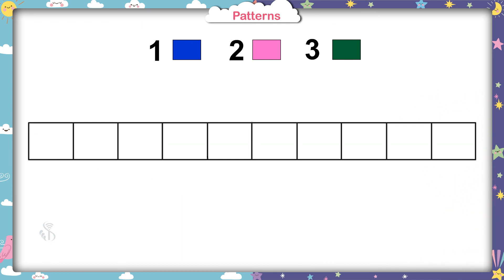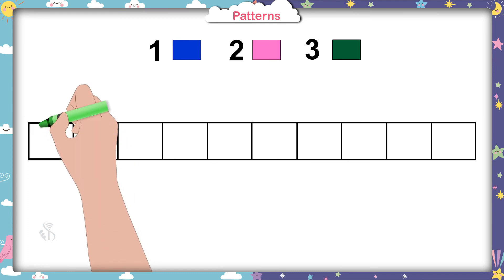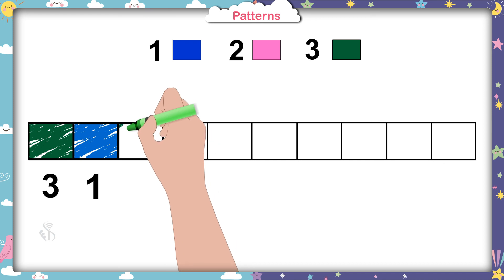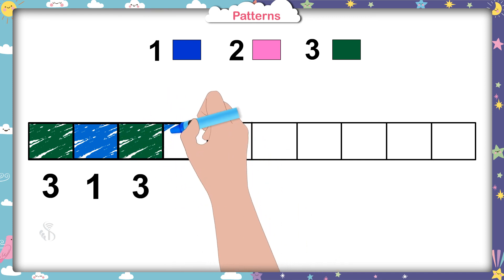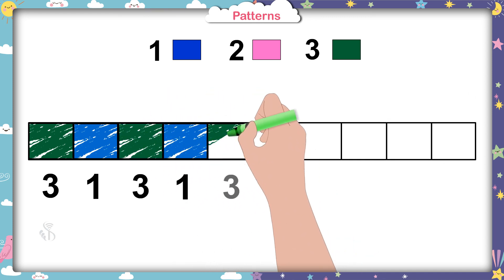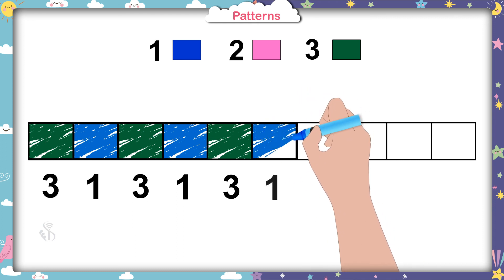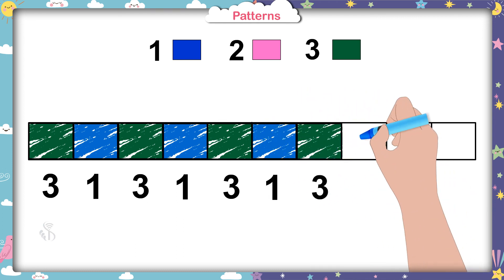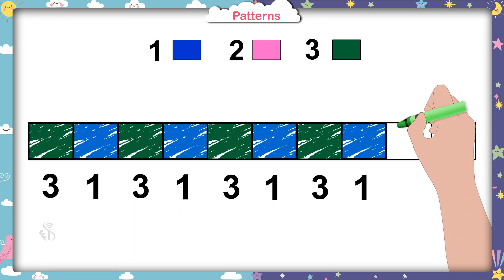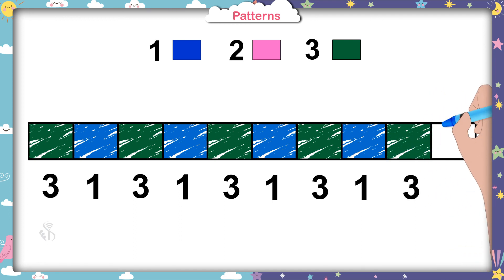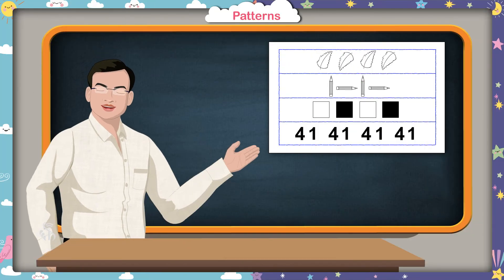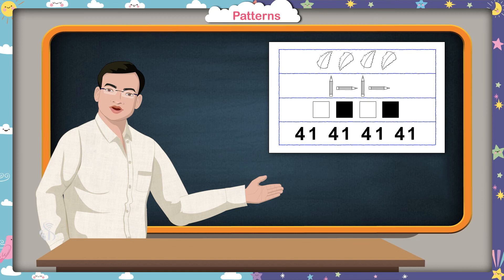Very good. Now color this next line: green, three; blue, one; green, three; blue, one; green, three; blue, one; green, three; blue, one. Well done, children. You can prepare a pattern of pictures and numbers in this way.